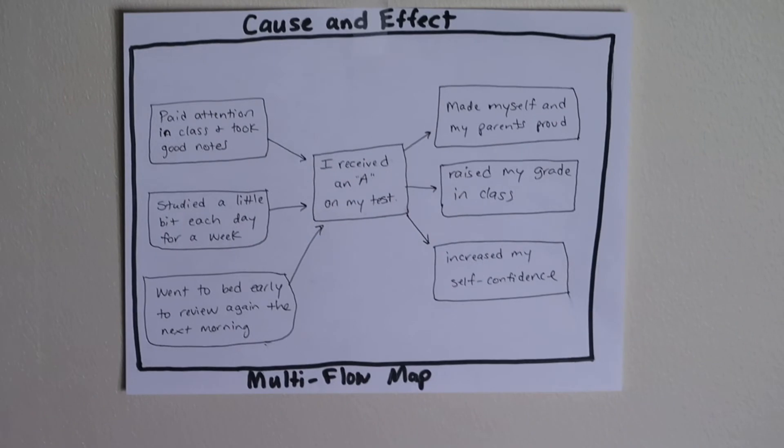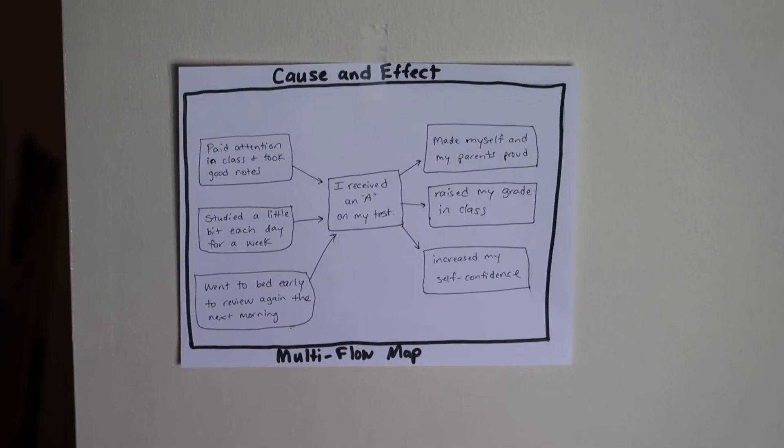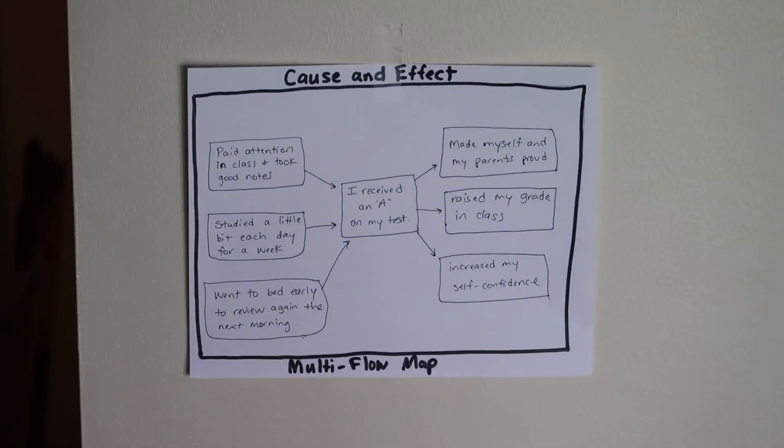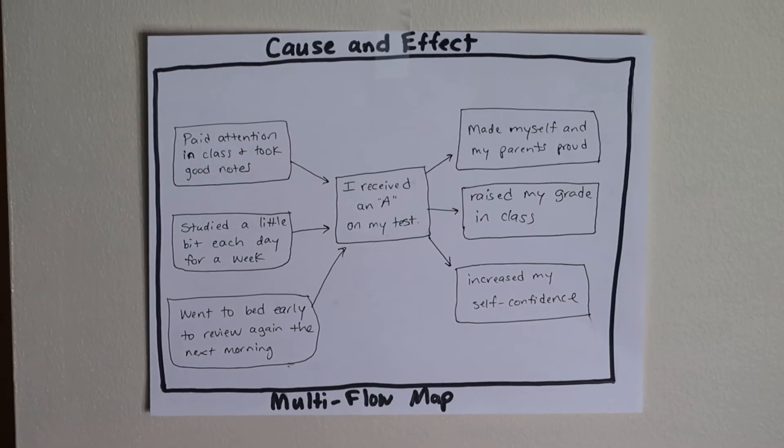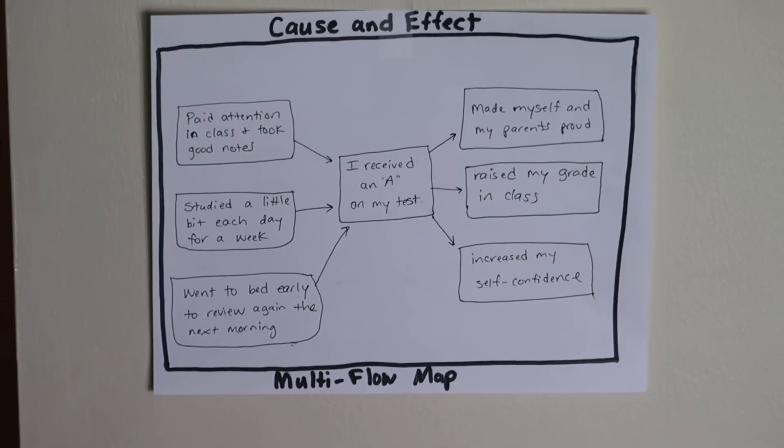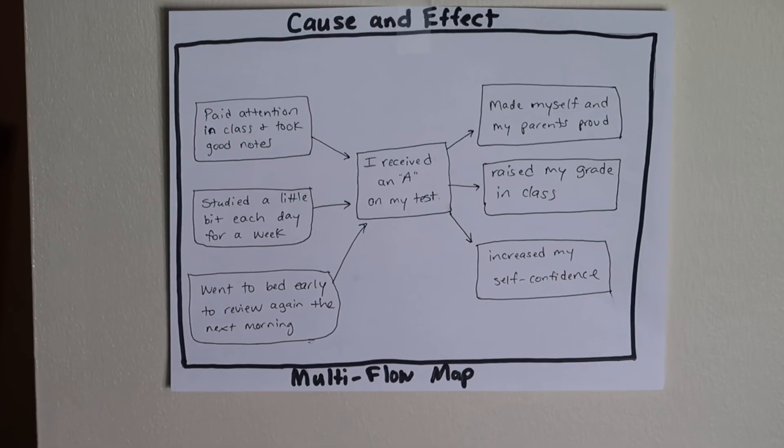So, I just kept it simple. For example, if the event was that I received an A on my test. Awesome. I received an A on my test. So, three examples of causes, three causes that went into me receiving an A on my test.